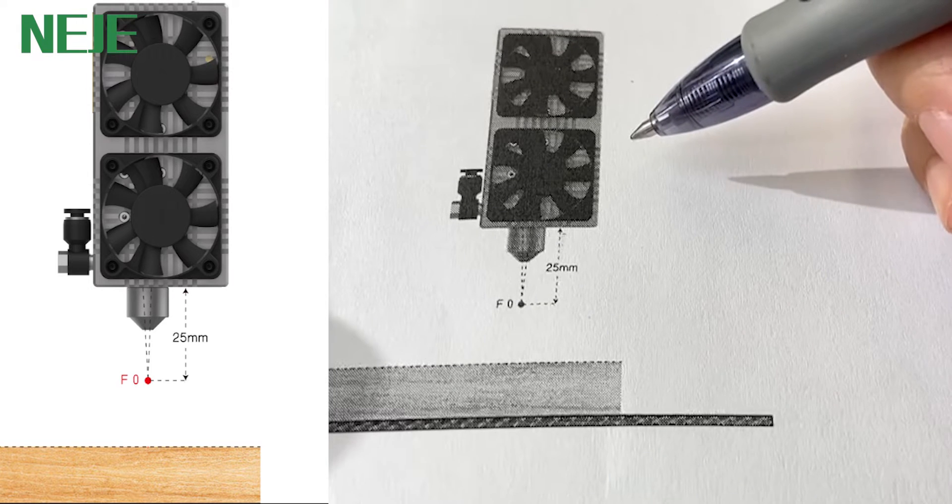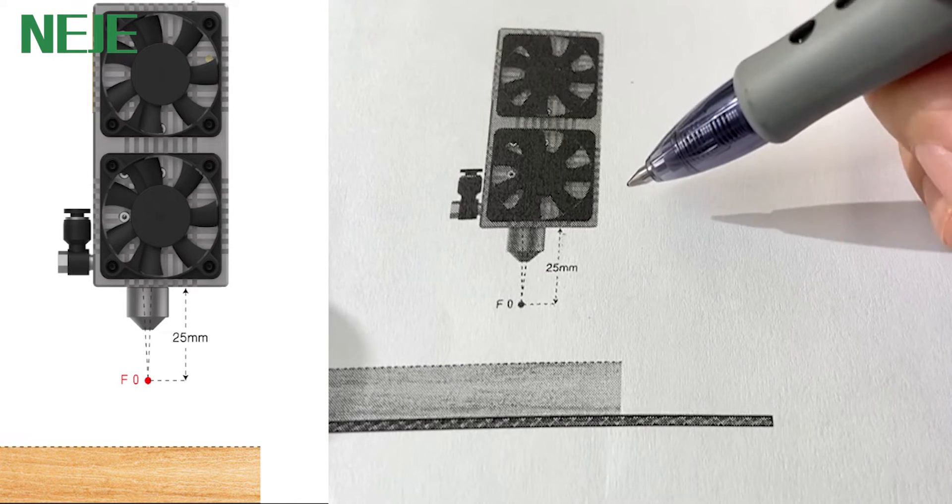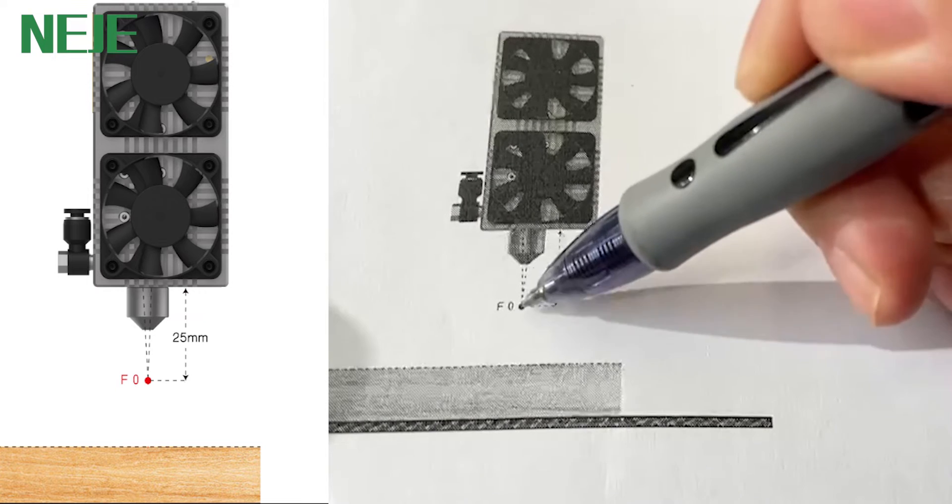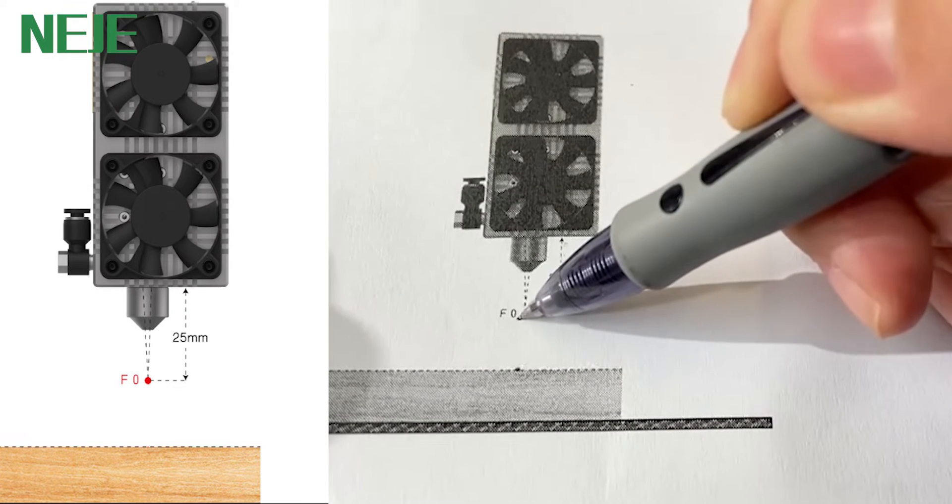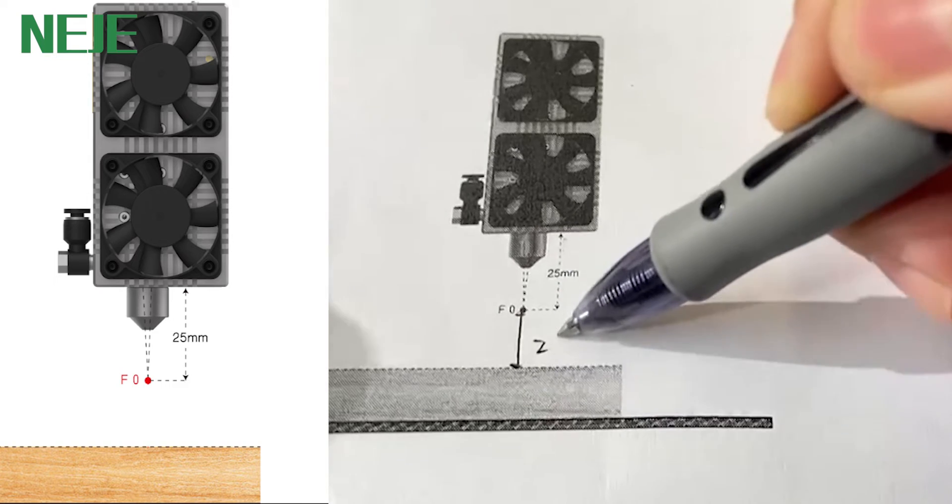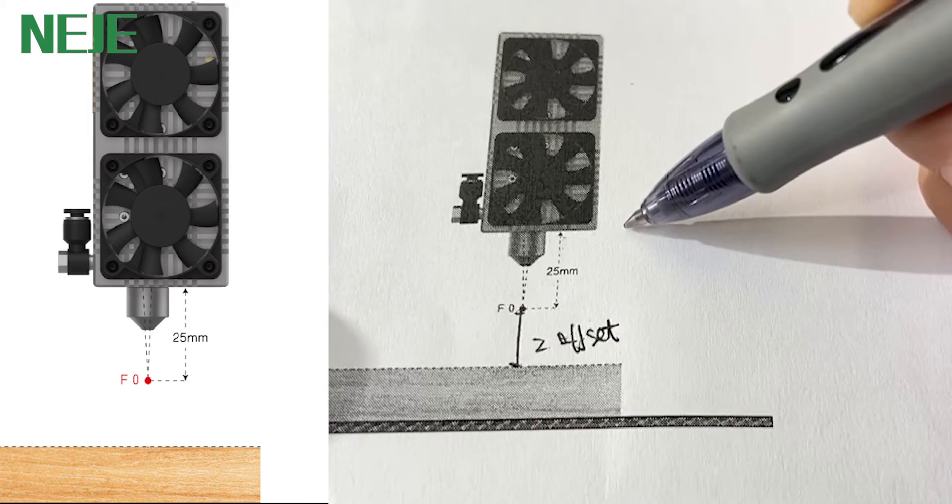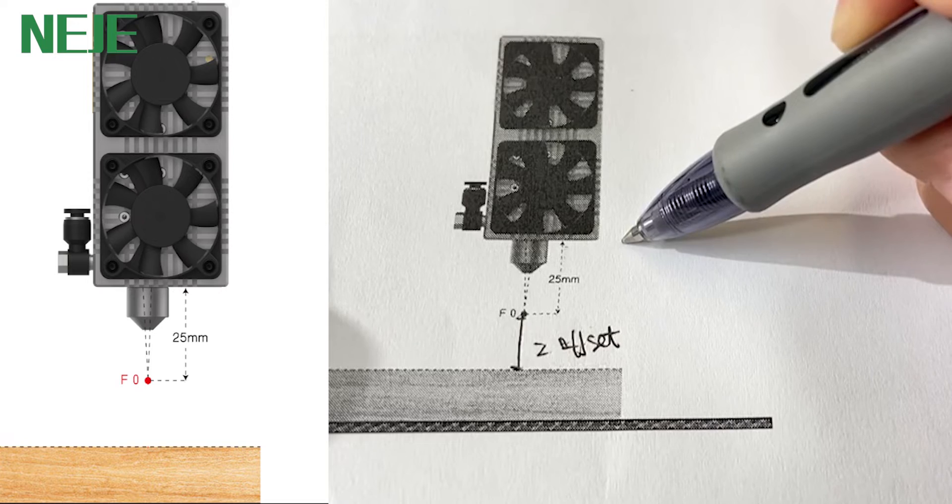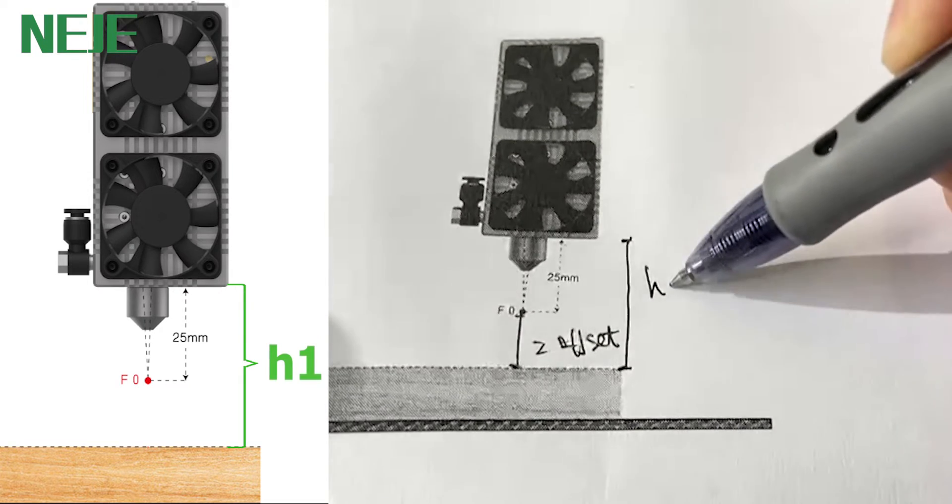This will be the second method. As we mentioned before, you need to make sure the focal point is on the surface of the material. So this will be the distance of Z-offset. You need to measure the distance from the edge of the module to the surface of the material. This will be H1.